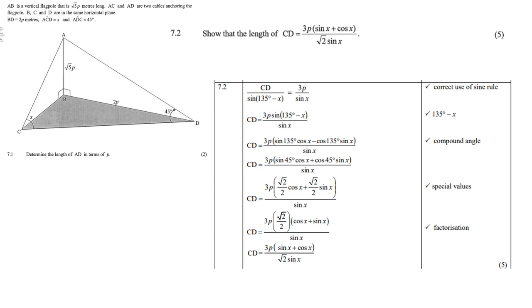That is the sine rule. Then, cross-multiply, and make CD the subject. Then, sine of 135 minus x. You can expand as a compound angle. Expand like a compound angle.